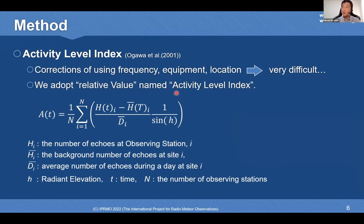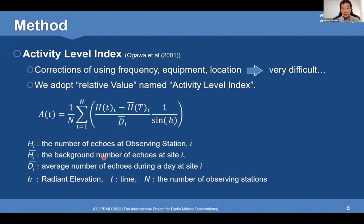So we adopt a relative value named the Activity Level Index. This is introduced in the handbook for meteor observations published by the IMO. It is the number of echoes at an observing station divided by the sporadic meteor echoes — leading to the difference between observed hourly rates and sporadic hourly rates, where sporadic hourly rate is the hourly average during a day. This formula means how many times more active than usual.